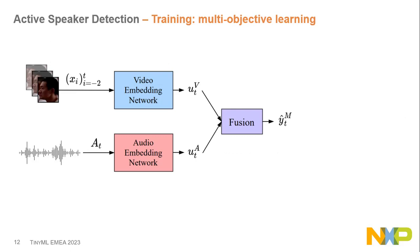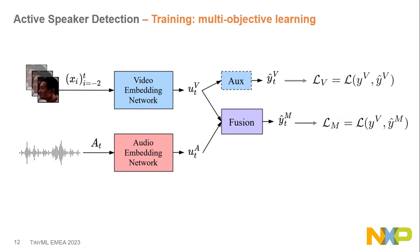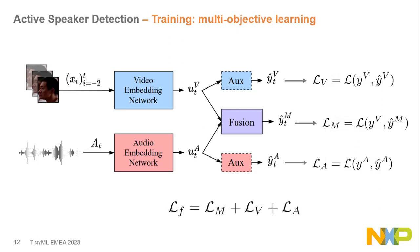Using these labels, we define losses. The main loss is the multimodal one using the video label, but we also leverage auxiliary classifiers — one for the video branch and one for the audio branch. The audio auxiliary classifier uses the audio-based label. We have multiple losses which we combine using a linear combination, and we train the model end-to-end.